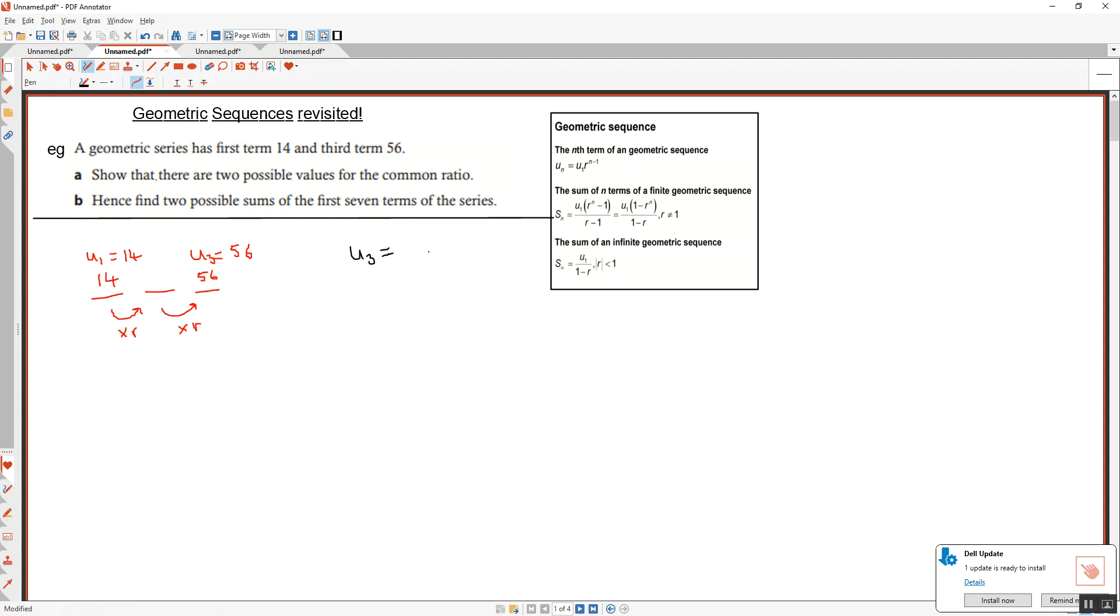At this point we can either try and work out what r is by using the information we've got. The easier way I think is to use the formula. If I set up my formula, what is u3 equal to using my formula? Yep, 14 because that's u1, multiplied by r, which is what we're trying to find out, and that's to the power of n. What's n in this case?